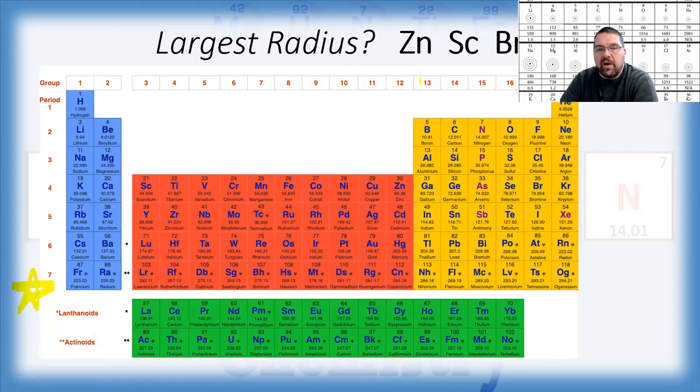So then I want to find my elements. I'm going to compare zinc, scandium, and bromine. I know that the further to the left and down I go, the larger my atoms get. And that's what I'm asked for, the largest radius. So that's telling me that of those three, I want the one that's furthest to the left. And in this case, that would be scandium.